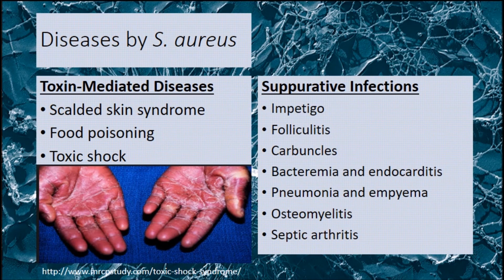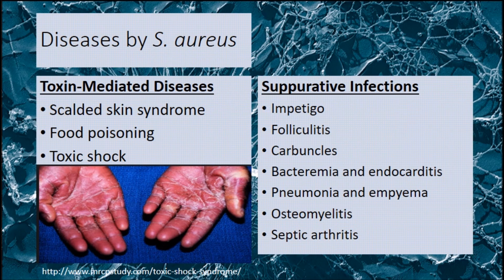There are many diseases caused by Staph aureus. Toxin-mediated diseases include scalded skin syndrome, food poisoning, and toxic shock — toxic shock is very important and has a very high mortality rate if not treated promptly. Suppurative infections include impetigo, folliculitis, carbuncles, bacteremia, endocarditis, pneumonia, osteomyelitis, and septic arthritis. Each of these is very important.